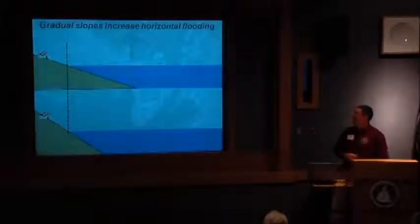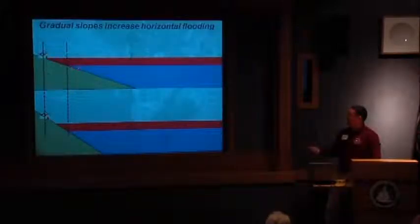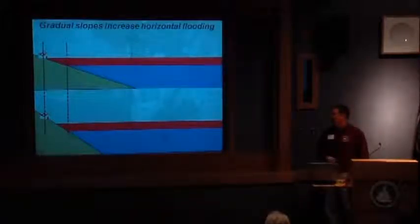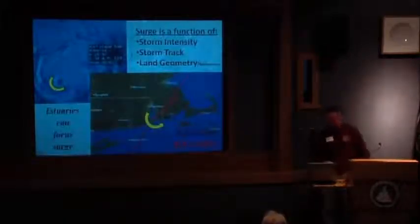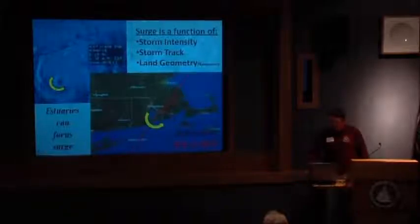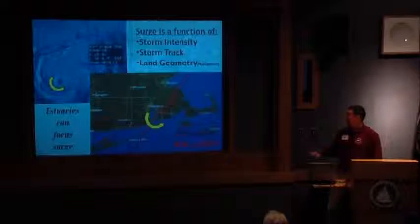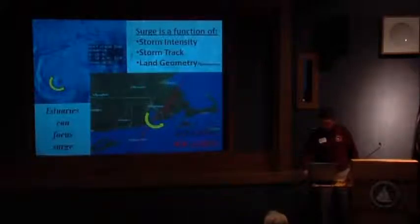Things to keep in mind: gradual slopes increase horizontal flooding. A more gradual slope means a larger horizontal area is covered by the same amount of water, but also that very small uncertainties and errors can have a greater impact. When talking about storm surge, geometry is very important. As you improve models you get better accuracy, but it's still not perfect. When Hurricane Bob hit, its rotation really funneled it right up into Buzzards Bay.